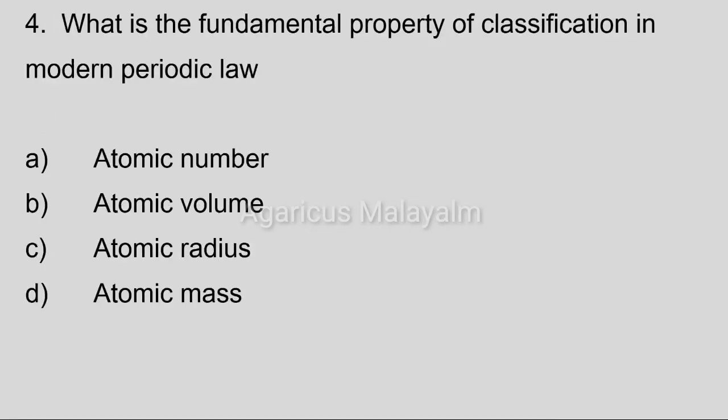Fourth question. What is the fundamental property of classification in modern periodic table? Option A, atomic number. Option B, atomic volume. Option C, atomic radius. Option D, atomic mass. Correct answer: Option A, atomic number.